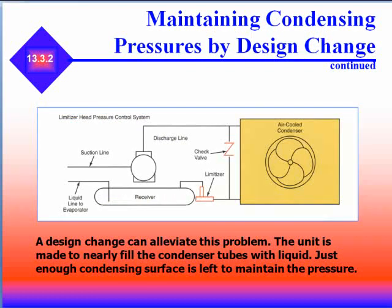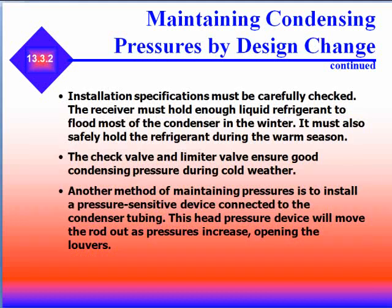A design change can alleviate this problem. The unit is made to nearly fill the condenser tubes with liquid — just enough condensing surface is left to maintain pressure. Installation specifications must be carefully checked prior to doing this. The receiver must hold enough liquid refrigerant to flood most of the condenser in the winter, and must safely hold the refrigerant during the warm season. Check valves and limiter valves ensure good condensing pressure during cold weather.